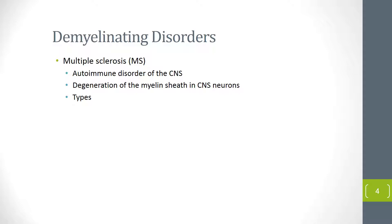In primary progressive disease, there is continuous neurologic deterioration from the time symptoms start. To summarize the three types: relapsing-remitting involves episodes of acute worsening then stable plateaus; secondary progressive involves gradual worsening with possible relapses; and primary progressive involves continuous neurologic worsening from onset.